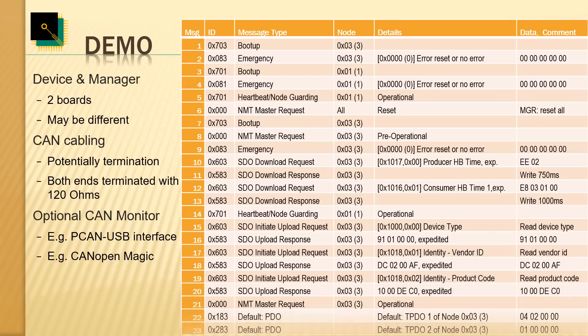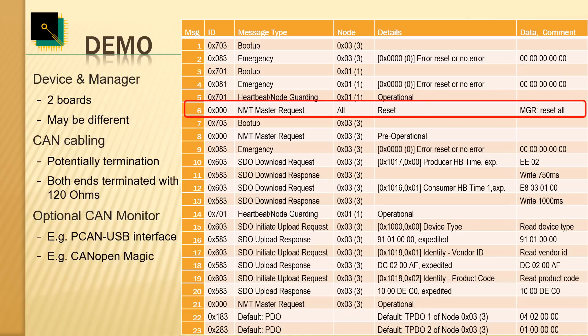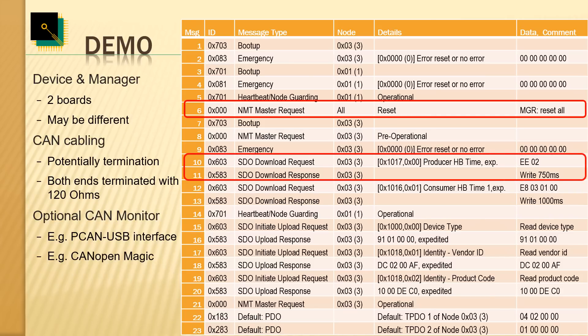This table contains a trace recording generated with CANopen Magic. From left to right the columns are: message number, CAN ID, message type, node ID involved, and a detailed interpretation of what the message does. For example, line 6 shows CAN message ID zero — the highest priority message in the CANopen system — which is the Network Management master request. Here it is a request to all nodes to reset, ensuring a clean fresh start after powering up. Lines 10 and 11 show an SDO — Service Data Object — request from the manager to node 3 to write the heartbeat time value of 750 milliseconds.